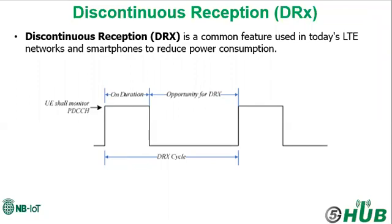DRX helps to save power by switching off the receiving section of the cellular module for a fraction of a second. During this time the device is not reachable, but as the period is under a second, the phone user doesn't recognize any problem or delays.